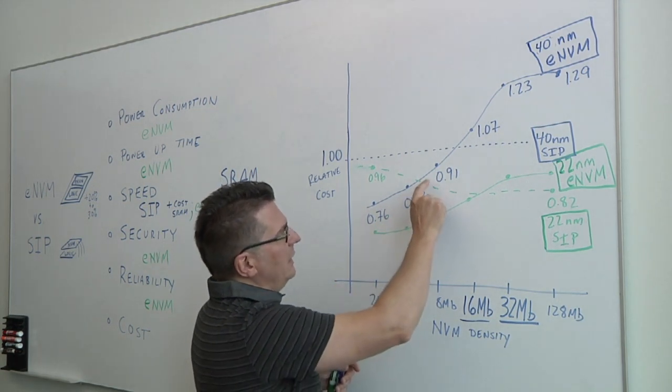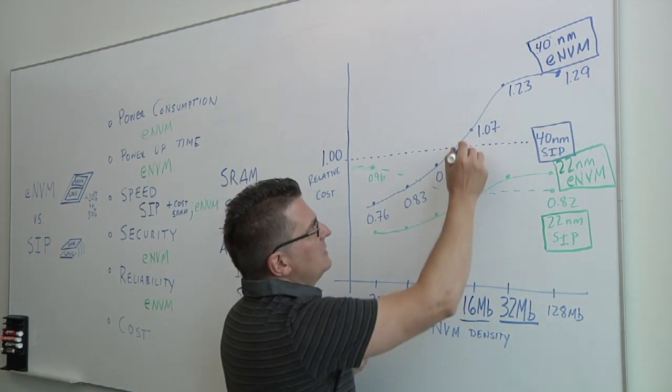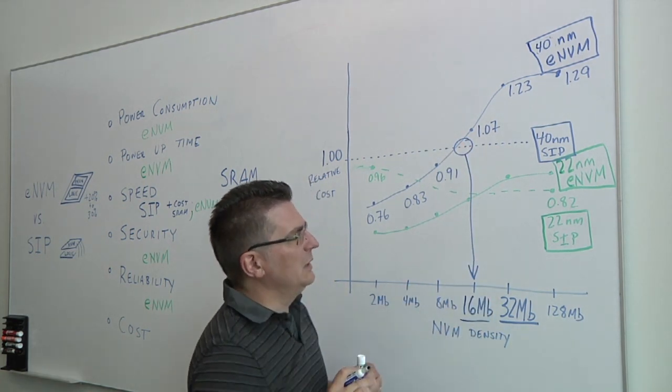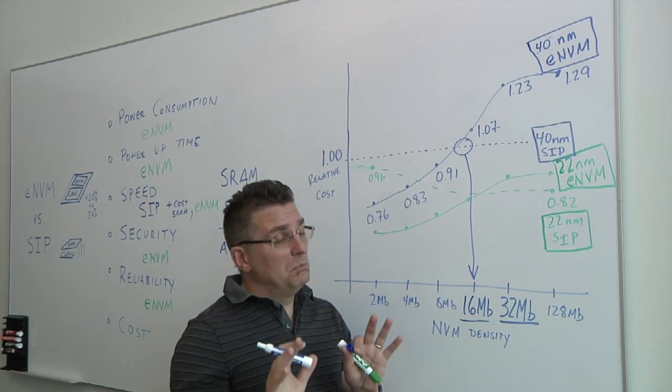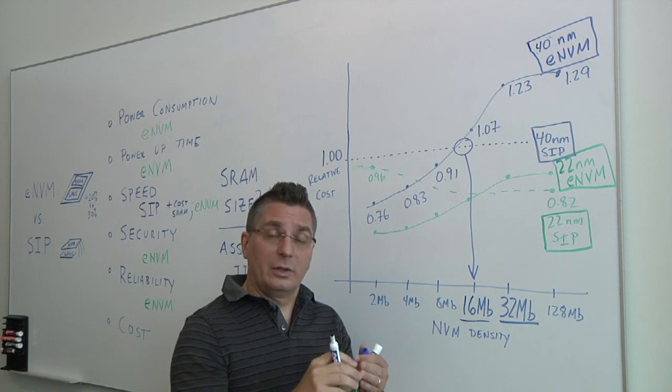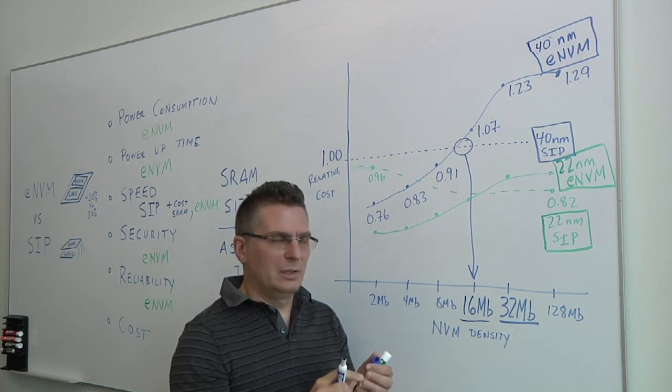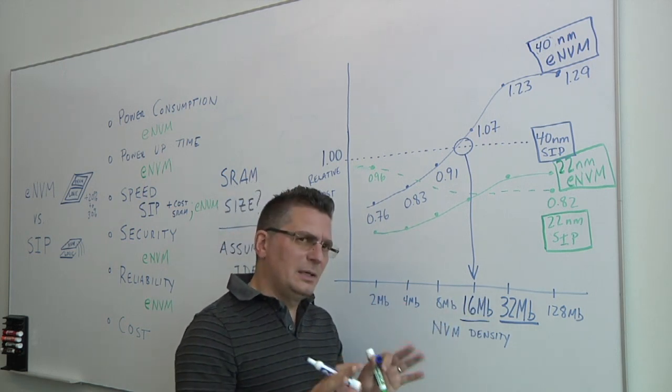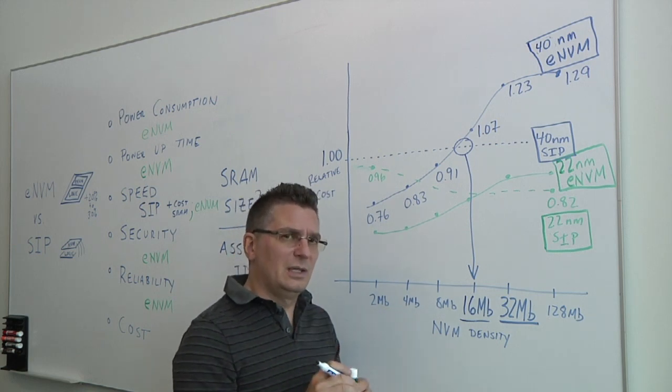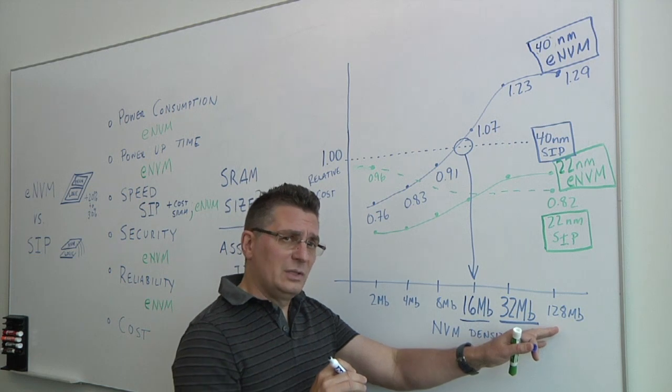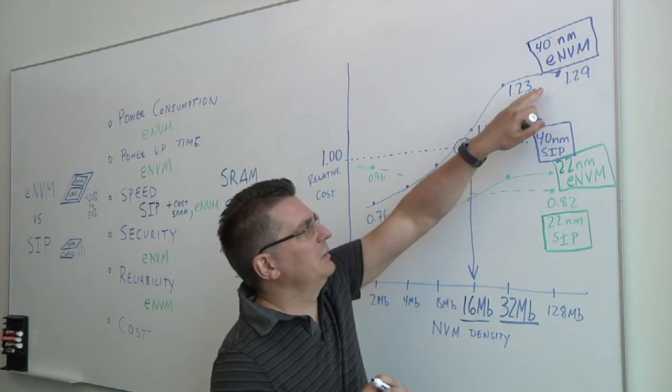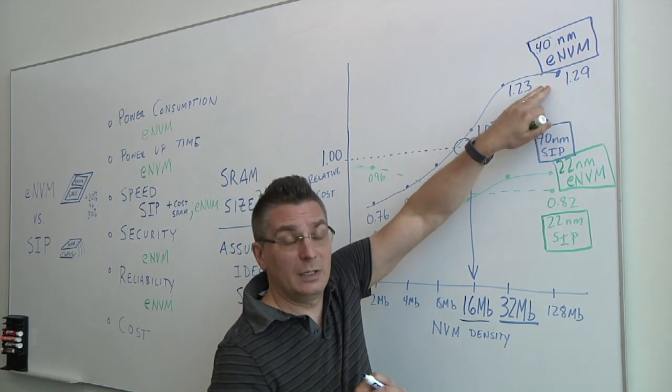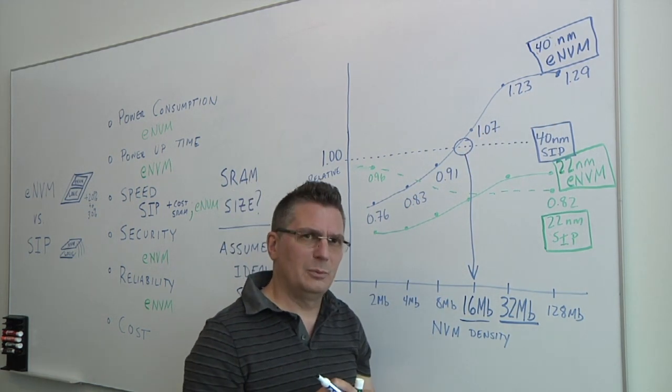Then as we go to 4, 8, and then 16 megabits, it's about at 16 megabits that we get a crossover. And what we see is at 40 nanometer, 16 megabits embedded, maybe you would buy that because that's the best for all the other reasons, power, speed, reliability. But above that, as you get to 32 megabits or beyond at 40 nanometers, then SIP becomes a lower cost option, especially using the ideal case. Going all the way to the extreme, which is 128 megabits, SIP is definitely a better option. It tends to saturate where the embedded NVM is about 30% more expensive than the SIP. So that's the 40 nanometer case.